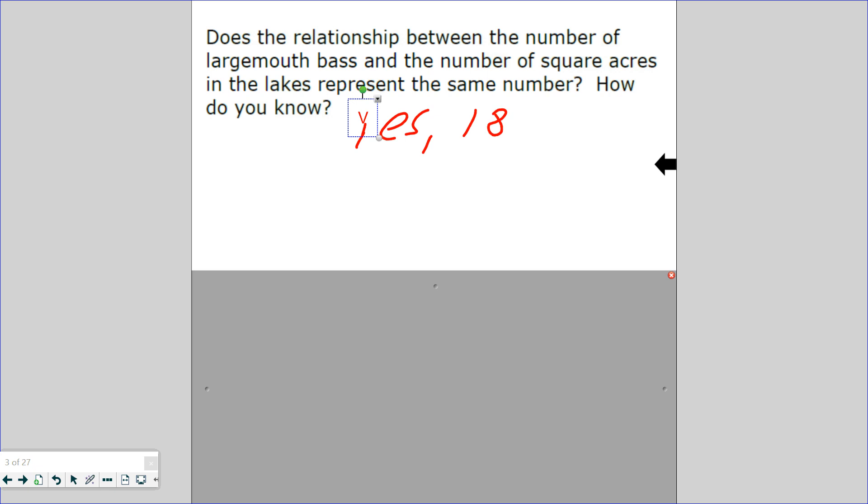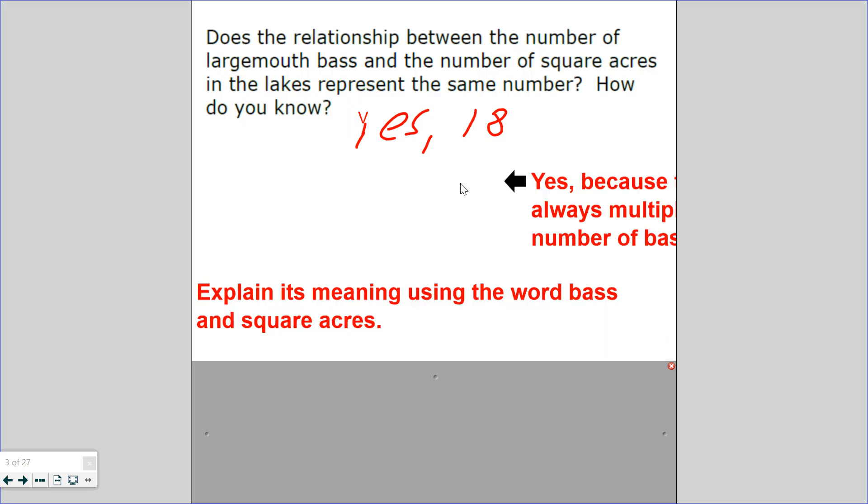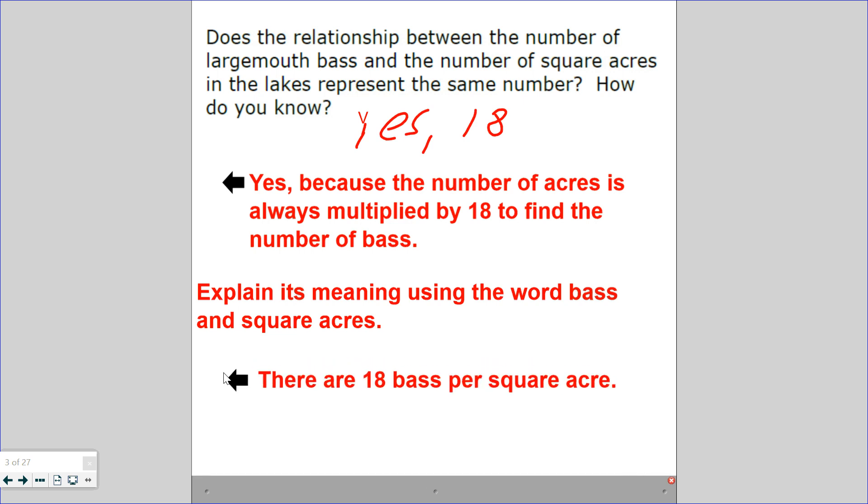So our question is, does the relationship between the number of largemouth bass and the number of square acres in the lake represent the same number? Yes, it does. And what number is it, by the way? It is 18. So how do we know? Because the number of acres is always multiplied by 18 to find the number of bass. So there are 18 bass per square acre. If I had one square acre, there would be about 18 fish. If I have two square acres, there would be 36 fish. If I have three square acres, that would be 54.